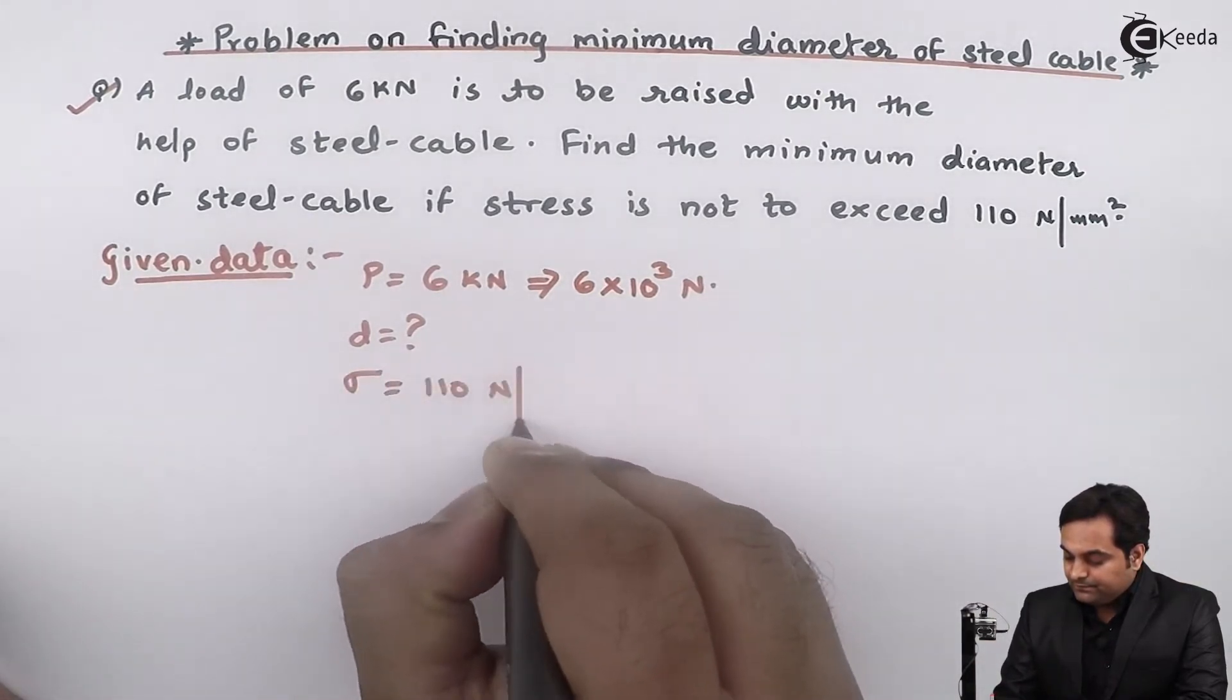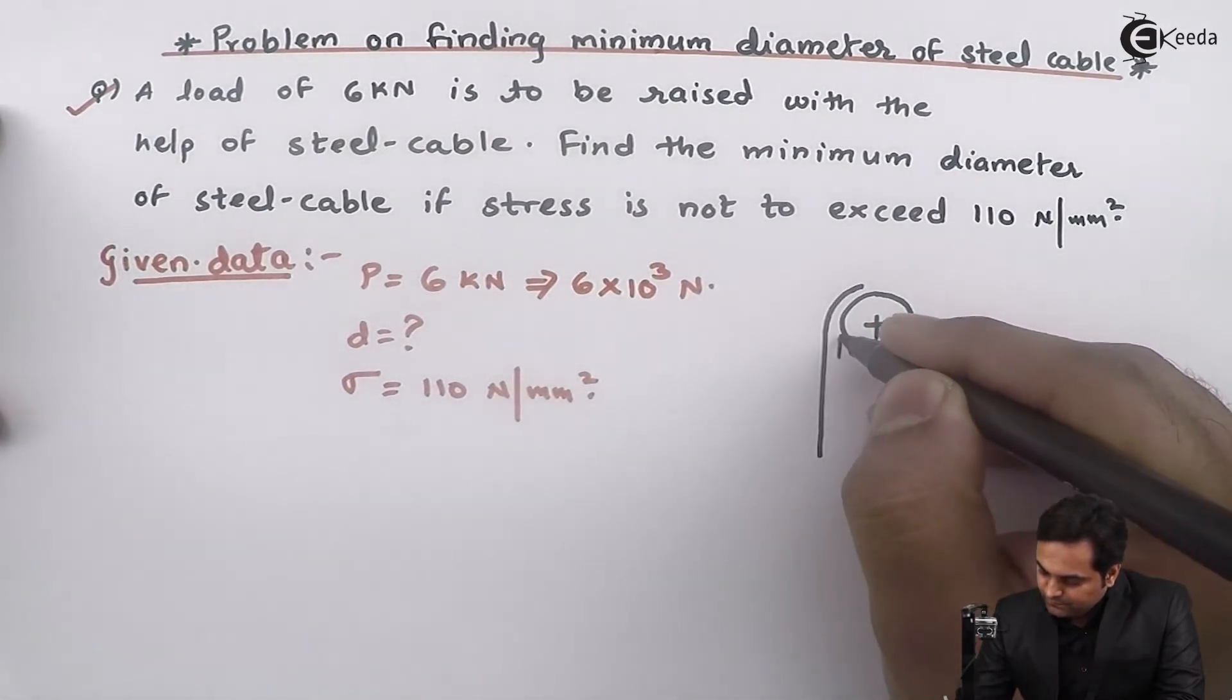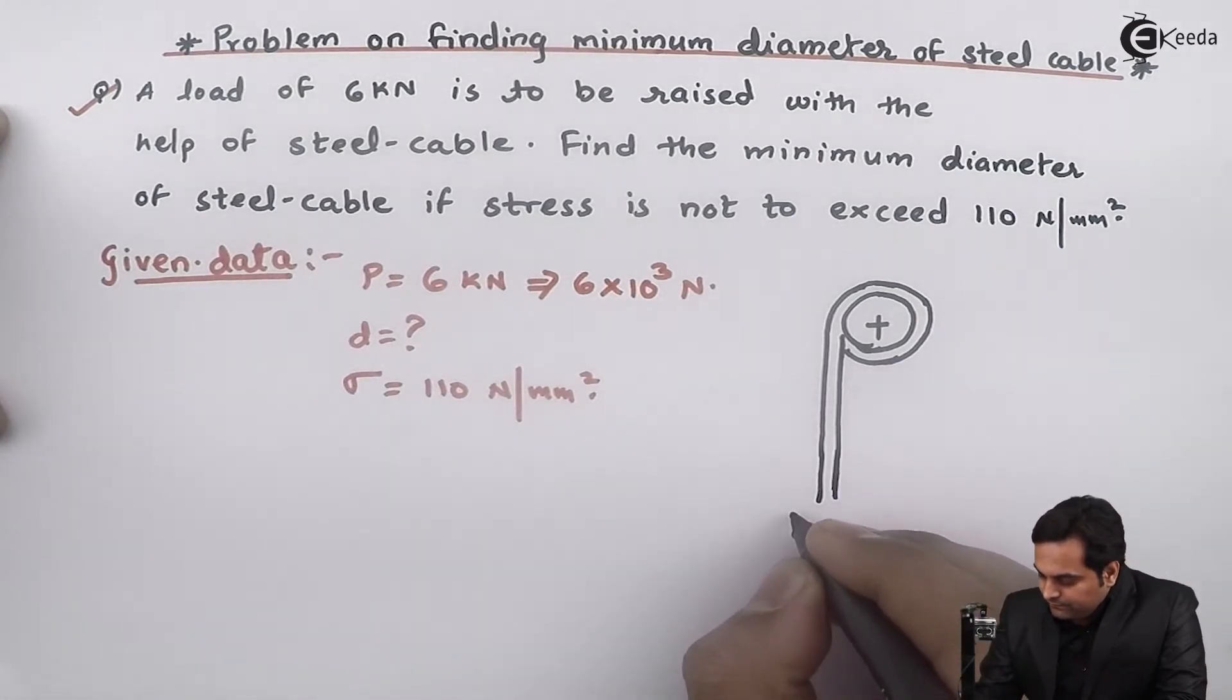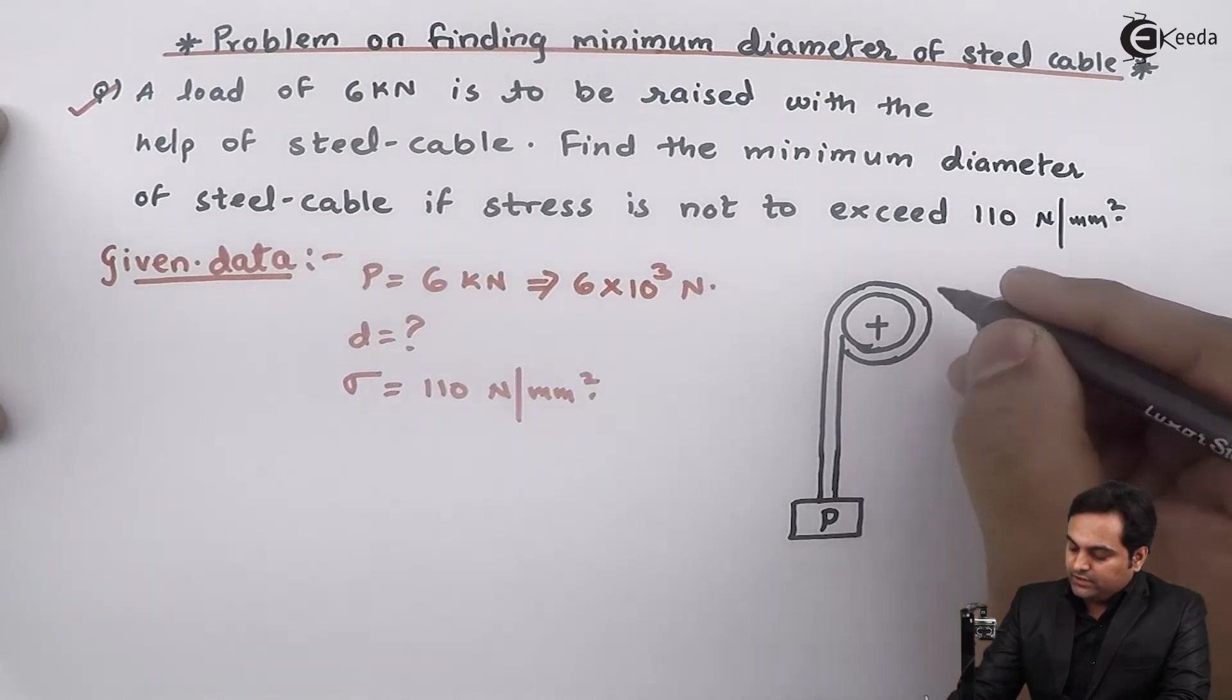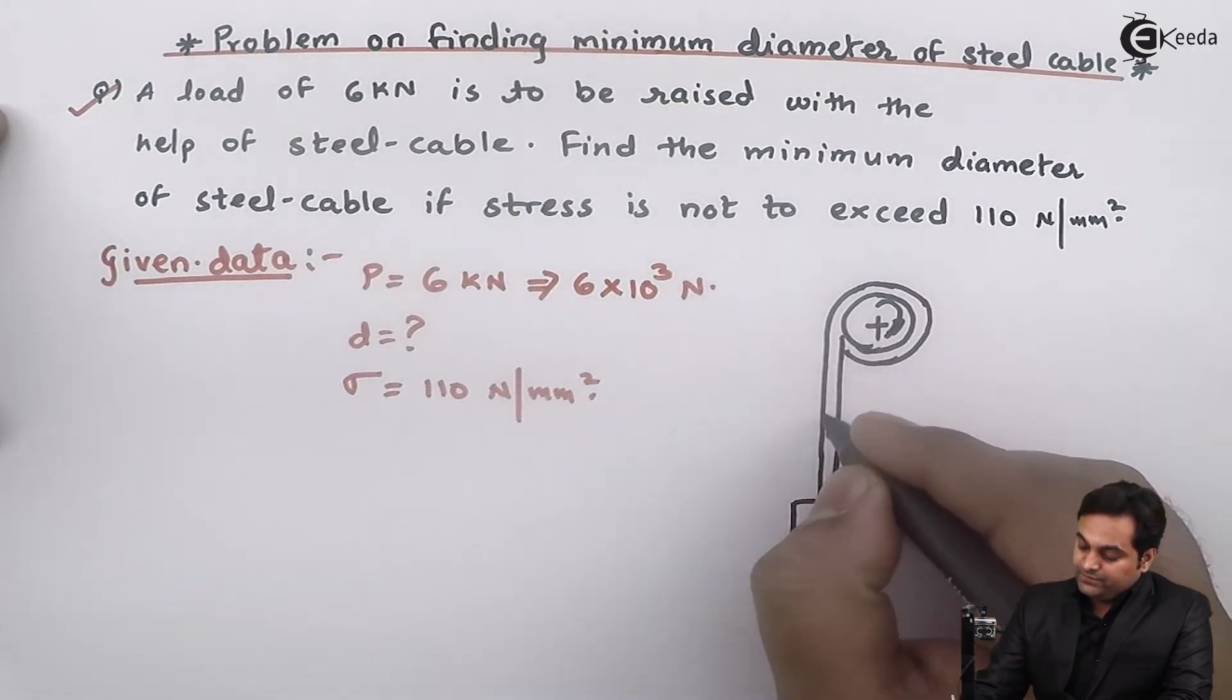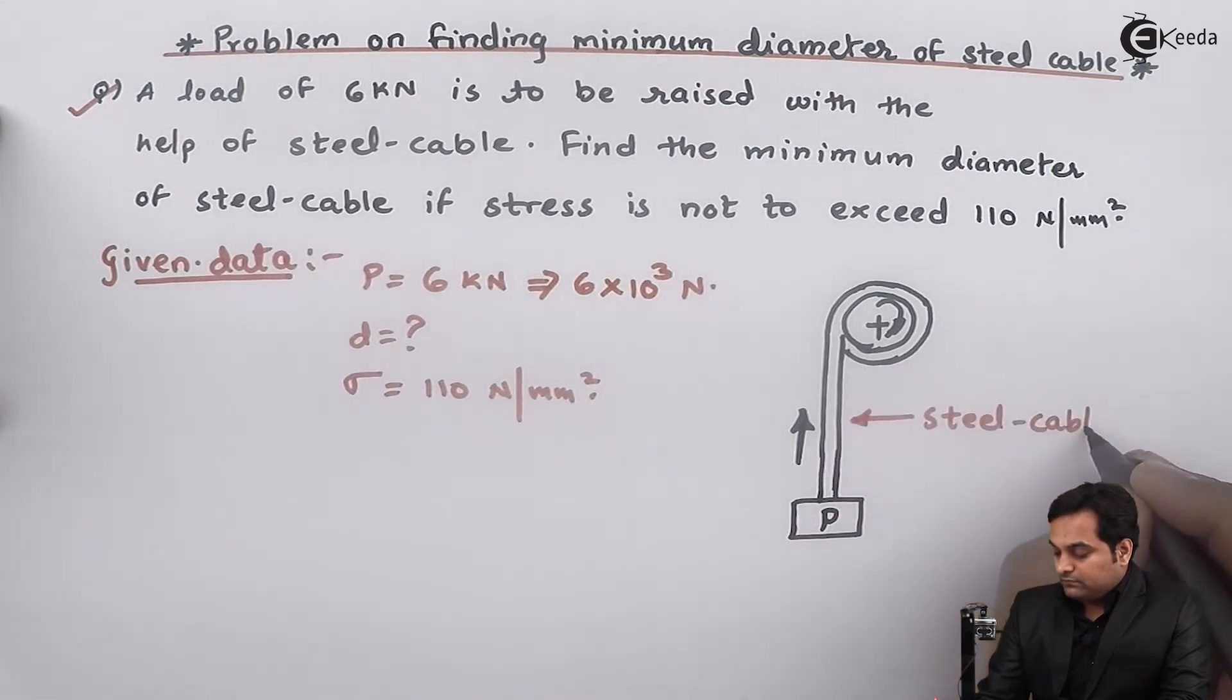Now, how the setup is there, let me explain it with a diagram. Here we are having a steel cable which is used to lift a load. So at the end of this steel cable we are having load P. And now how this will work is that here we are having a pulley, over that a steel cable is bound, and when this pulley rotates the load will get lifted upwards.